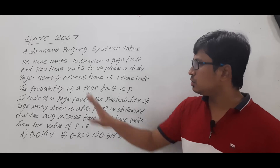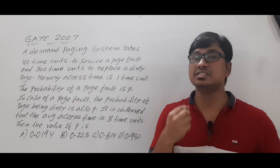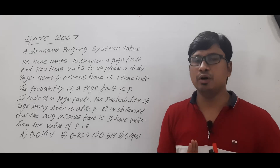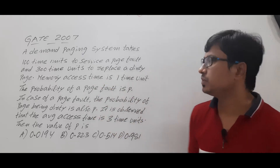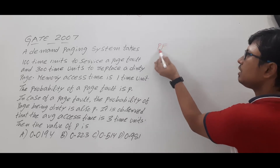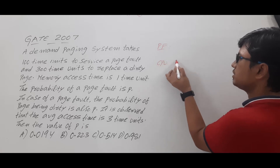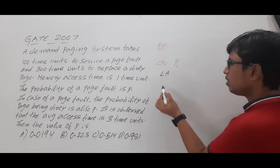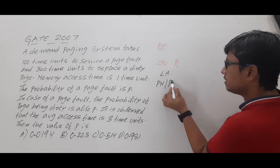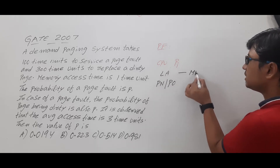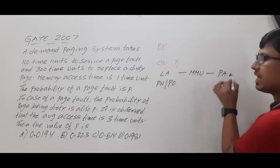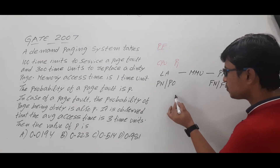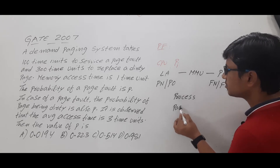To solve this question I need to discuss a few important concepts: page fault, dirty page, and page fault service time. First, let me discuss page fault. When the CPU is executing process PI, it generates a logical address consisting of a page number and page offset. The memory management unit converts the logical address to a physical address, which consists of a frame number and frame offset.